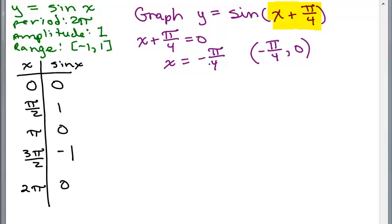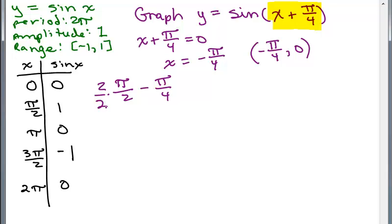Notice — I could have taken x equals negative π/4 by simply subtracting π/4 from this 0 to get negative π/4. And that's how we're going to get our five key points: we're going to subtract π/4 from all of the x coordinates. So if I do π/2 minus π/4, I need a common denominator. That gives me 2π/4 minus π/4, which equals π/4.